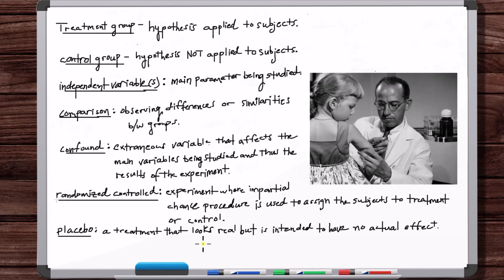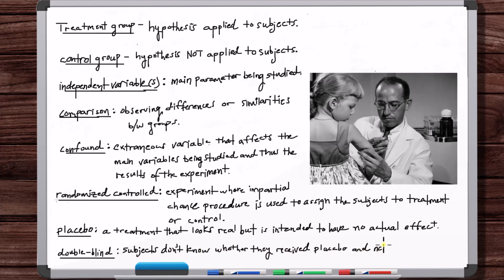Using the placebo makes the subjects blind, but they also wanted the experimentalists to be blind — a double blind study. The doctors inspecting for whether a child had polio didn't know if the child they were inspecting had received the vaccine or not, because in certain cases there was ambiguity about whether a child had polio and how severe it was. In a double blind study, neither the subjects nor the experimentalists know who received the placebo. For the most ideal controlled experiment, it should be double blind.